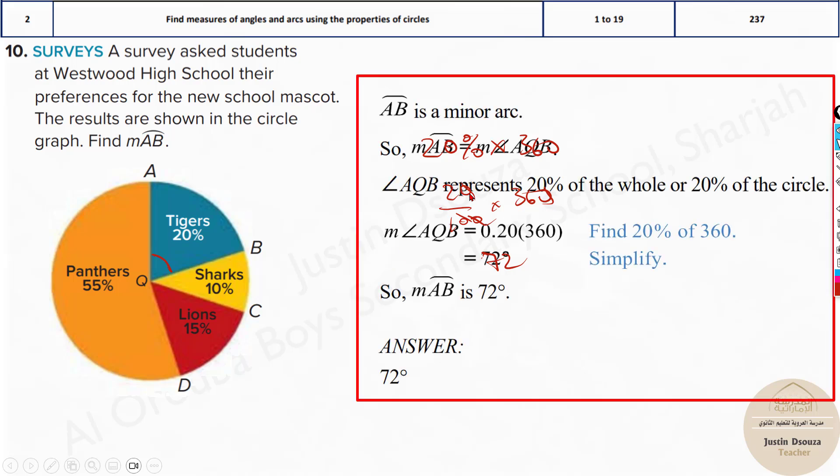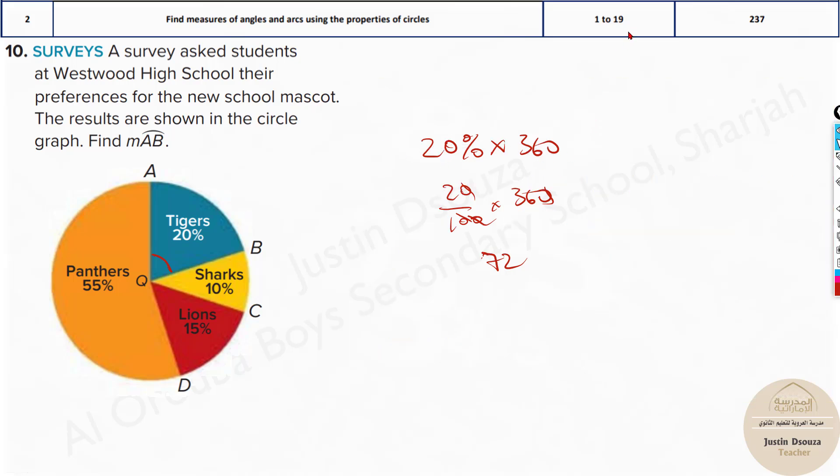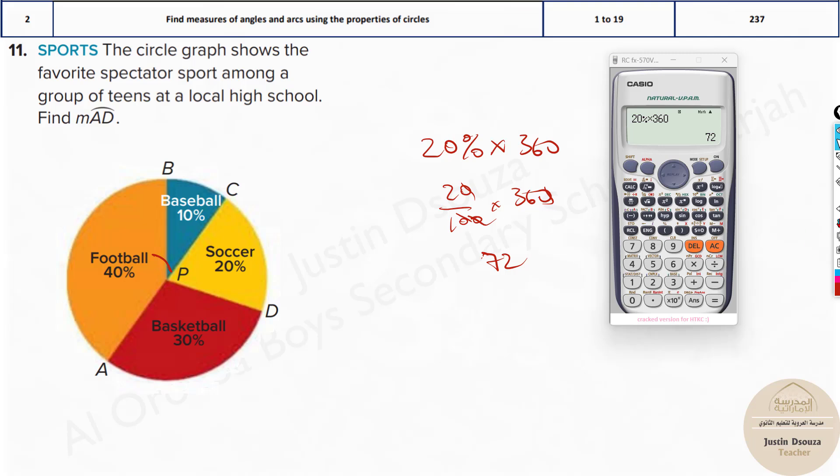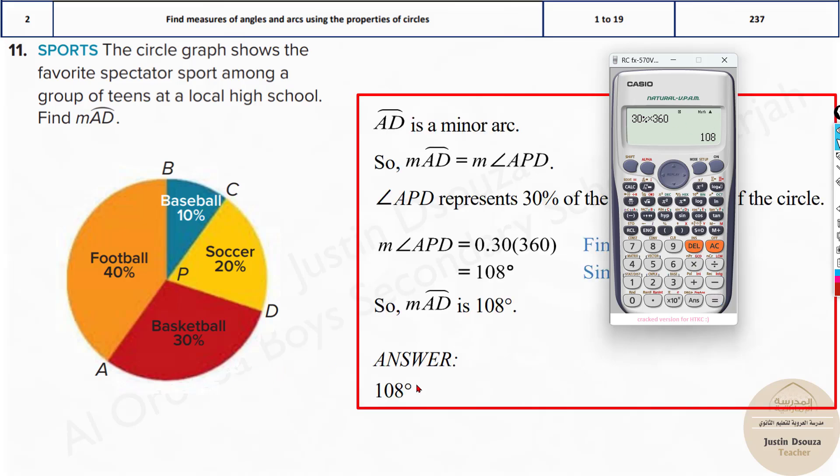Now I will show you how we can directly put this in the calculator. You can press 20 as it is but then you have a symbol for percentage, shift and this symbol gives you percent, multiply it by 360. Just find the answer and select the correct option. Same way you can do AD. That is 30% times 360 and that's the answer 108 degrees.